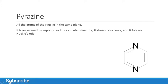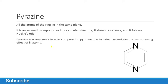All atoms of the ring lie in the same plane. It is an aromatic compound as it has a circular structure, shows resonance, and follows Hückel's rule which is 4n+2. It also acts as a weak base when compared to pyridine due to the inductive and electron-withdrawing effect of the nitrogen atom. Because of electronegativity, nitrogen has the potential to withdraw electrons from the whole structure of pyrazine, so it acts as a very weak base.